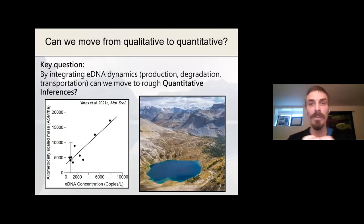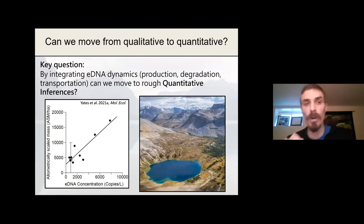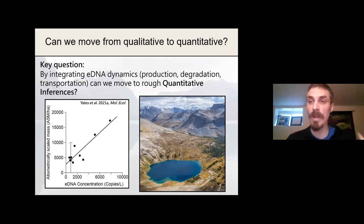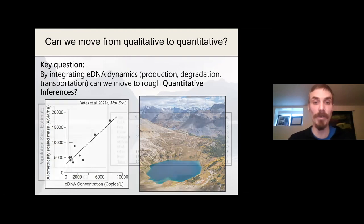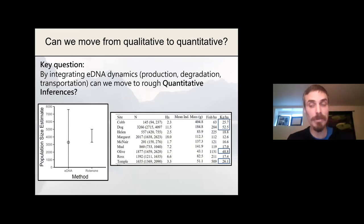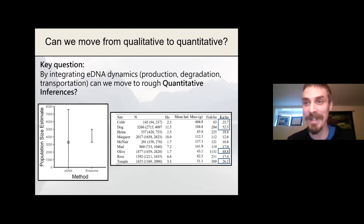A key question moving forward for the field is: can we move from these kinds of qualitative inferences — which I think we're pretty much at the point where we could do with qPCR and ddPCR — to more quantitative inferences? I think the way to do this is by integrating eDNA dynamics, thinking about its production, its degradation, and its transportation in natural ecosystems. I think eDNA is showing promise for this. Using our nine study lakes, we were actually able to make a pretty decent prediction about the total amount of biomass present in Hidden Lake — quantitatively saying there is probably less biomass of fish there than in four of our nine study lakes, for just a single day of sampling where we collected a dozen eDNA samples.